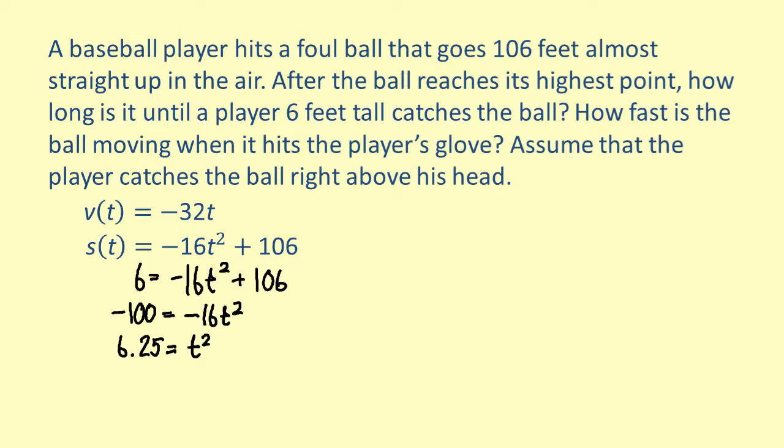Now, since t represents time, any negative values for t can be disregarded. So, solving for t, we take the principal square root of both sides and find that t is equal to 2.5. This means it takes 2.5 seconds for the ball to go from its highest point to the player's glove.